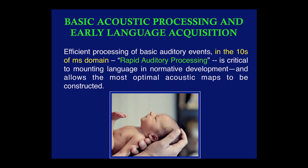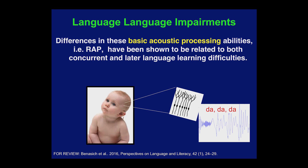Efficient processing of basic auditory events in the tens-of-milliseconds domain, called rapid auditory processing, is critical to language development and allows the most optimal acoustic maps to be constructed. This is because many speech sounds — phonemes like 'da' or 'ta' — only differ by brief spectral and temporal changes specifically within the tens of milliseconds. Differences in these basic acoustic processing abilities have been shown to be related to both concurrent and later language learning difficulties.